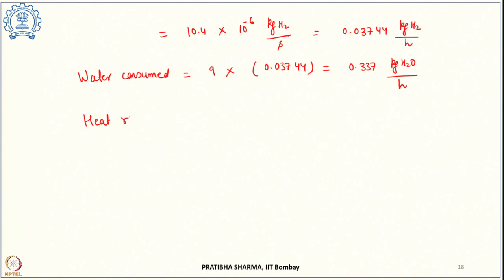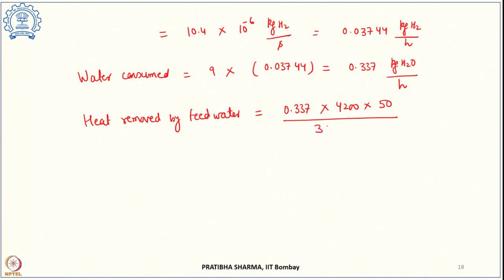The heat removed by the feed water is M × CP × ΔT = 0.337 × 4200 × 50 / 3600 = 19.66 watt. This much heat is removed by the feed water in the electrolytic process. These are the problems we have covered in this tutorial on water electrolysis.